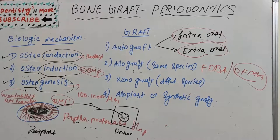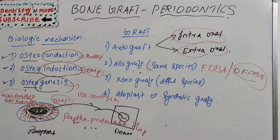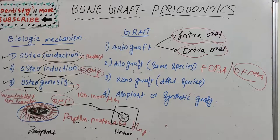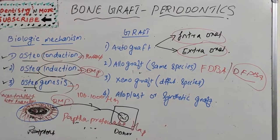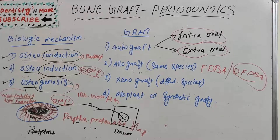The fate of a bone graft varies. Once material is placed in a bone defect, it may: have no effect at all, act as a scaffolding material for the host to lay new bone upon, or the bone graft material itself may deposit new bone due to its own cellular viability. This concludes the discussion on biologic mechanisms — osteoconduction, osteoinduction, and osteogenesis — and the various graft types.